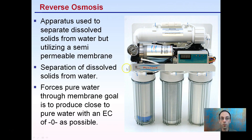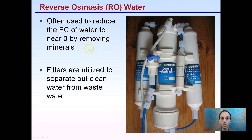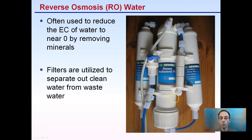Reverse osmosis is an apparatus used to separate the dissolved solids from water utilizing a semi-permeable membrane — many of the same terms we just talked about. This forces pure water through a membrane with the goal of producing water as close to pure as possible, with an electrical conductivity (EC) of zero, or as close to zero as possible. Reducing the EC of water by removing minerals is the reason reverse osmosis is used, and it's used quite frequently, especially for hydroponic production. Filters separate out and clean water from wastewater, so there's a constant flow — a wastewater output, a clean water output, and the reverse osmosis end water, which is the water you want to use.